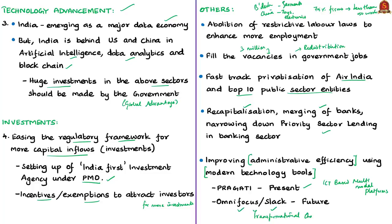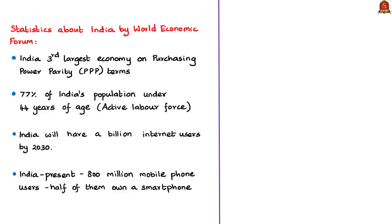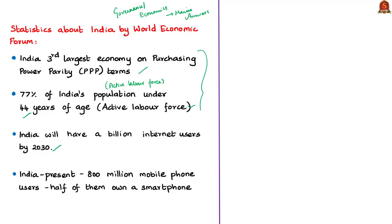Throughout this editorial, there are statistics about India useful for governance or economy-related mains answers. India is the third largest economy in the world in terms of purchasing power parity, with consumer spending of 5.7 trillion US dollars. 77% of India's population are under 44 years of age — active labor age — and 80% of these belong to the middle class. India will have a billion internet users by 2030. These figures are quoted from the World Economic Forum. India currently has around 800 million mobile phone users, half of whom use a smartphone.